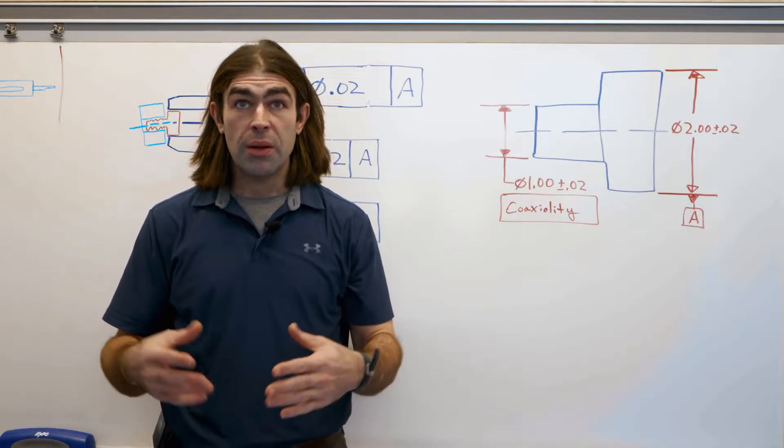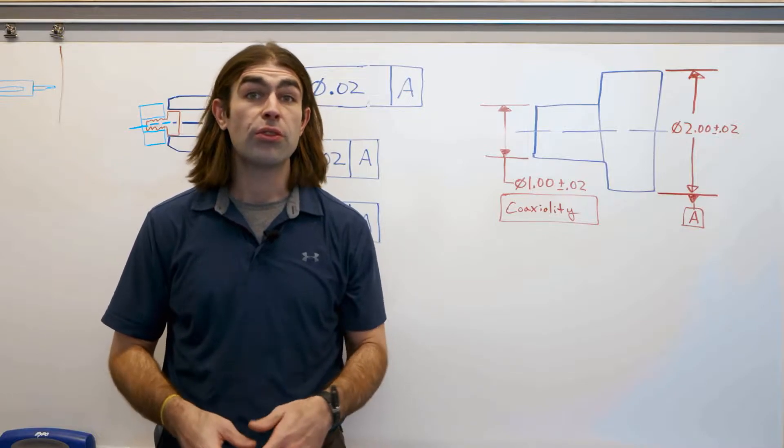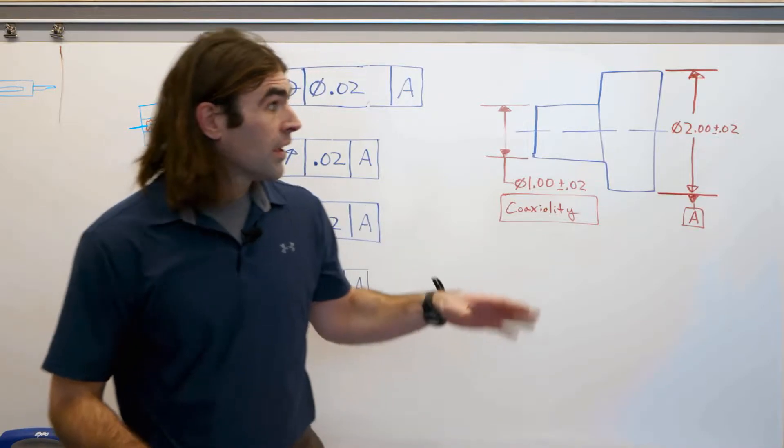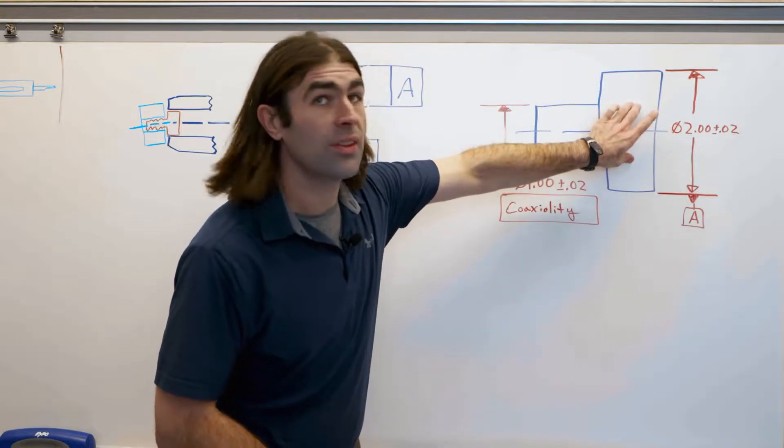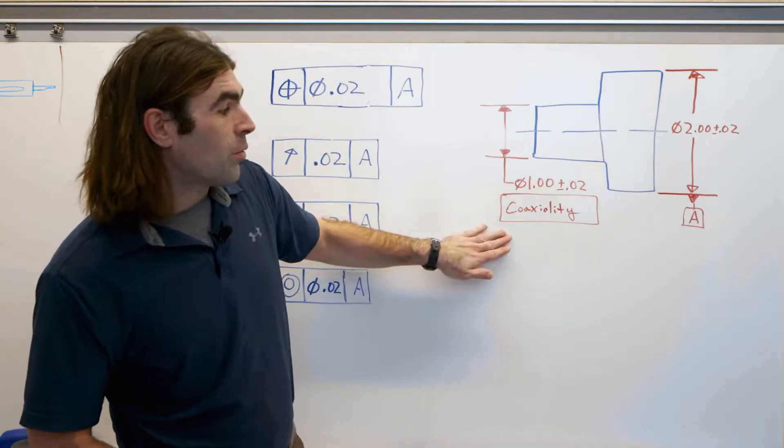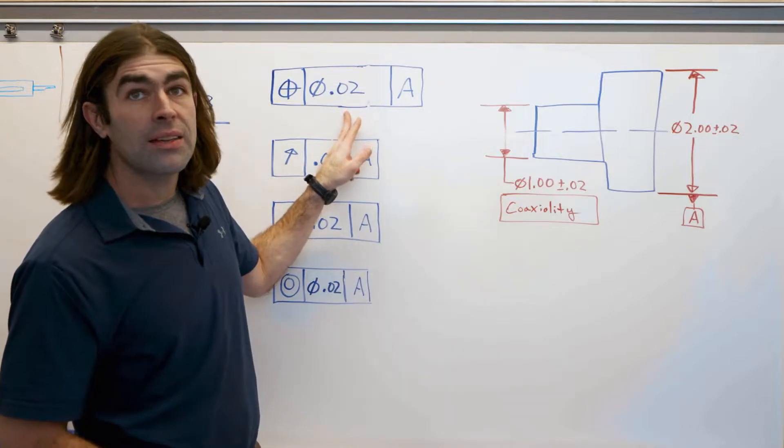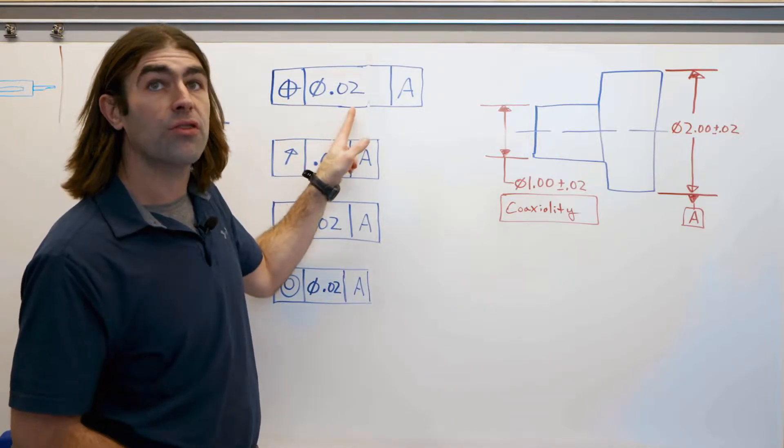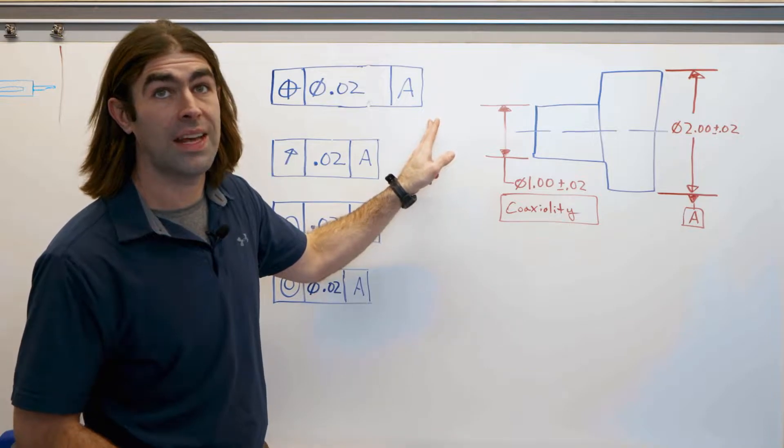Now the first and probably more common is to use position. So in this drawing right here, datum A is this larger diameter. We've got the second diameter related to it with this tolerance, so a position of 20 thousandths to datum A.